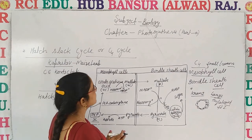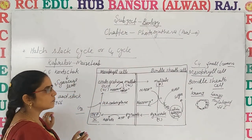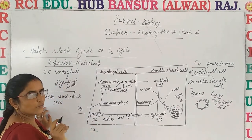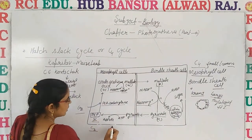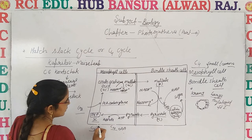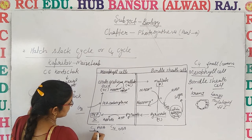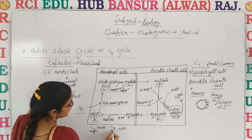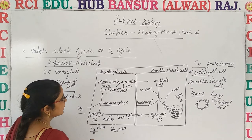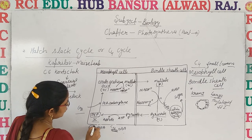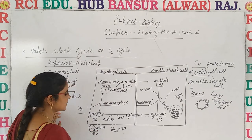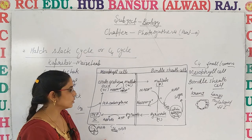This is all about the C4 cycle. What is the difference between the C3 and C4 cycle? In the C3 cycle, the first stable compound is phosphoglyceric acid, which is a 3-carbon compound. Whereas in the C4 cycle, the first stable compound is oxaloacetic acid, which is a 4-carbon compound. Another difference: the C3 cycle takes place in the bundle sheath cell, whereas the C4 cycle takes place in both mesophyll cell and bundle sheath cell. Also, in the C3 cycle the energy produced is less, whereas in C4 it is a large amount.